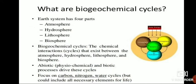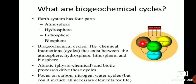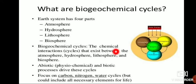Biogeochemical cycles have four parts: atmosphere, hydrosphere, lithosphere, and biosphere. The biological cycles represent the chemical interactions that exist between the atmosphere, hydrosphere, lithosphere, and biosphere. Biotic and abiotic processes drive these cycles. Focus on the carbon, nitrogen, and water cycles, but include all necessary elements for life.